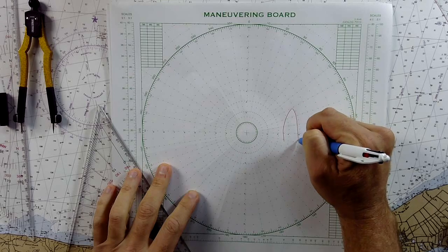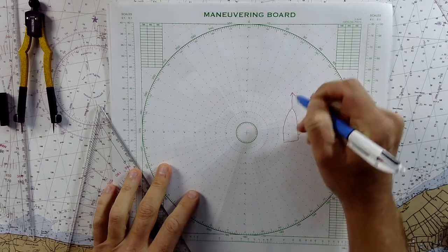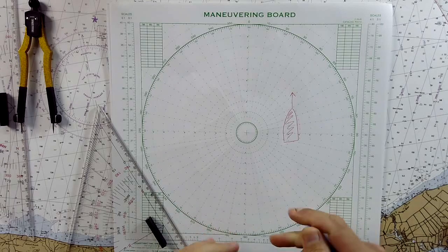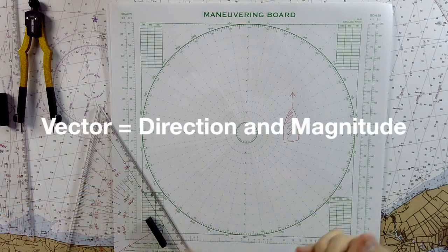If your vessel is underway, making way, you're going to have a couple of different vectors, which is a direction and a magnitude, that are affecting you.